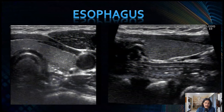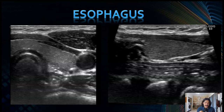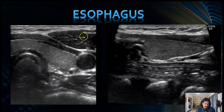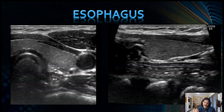The gastrointestinal system begins in the mouth — the tongue, the salivary glands create saliva which begins the digestion process, and the teeth chew the food. Then it goes down the esophagus into the stomach and so forth. In a transverse view at the level of the thyroid, you can usually see the esophagus posterior to the left lobe of the thyroid. So here's your carotid, isthmus of the thyroid, left lobe, esophagus, sternocleidomastoid, and trachea. It'll be posterior to the left lobe and lateral to the trachea, especially visible in skinnier or younger patients.